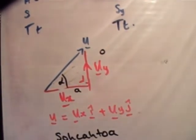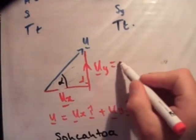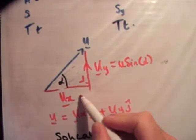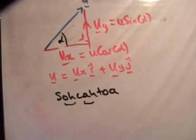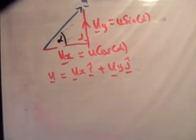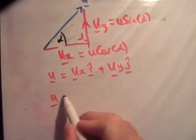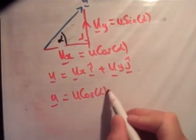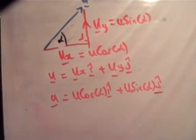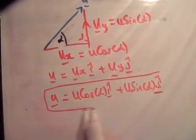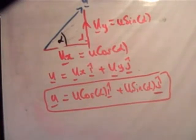So as a result, we can say that u sub y is equal to u sine alpha, and u sub x is equal to u cos alpha. And as a result of that, you can write a full expression for this u here by saying that it's equal to u cos alpha i hat plus u sine alpha j hat. And that's the answer to part one of your question. Now that was pretty straightforward. It's nothing you haven't done before, but that's it just done out explicitly.